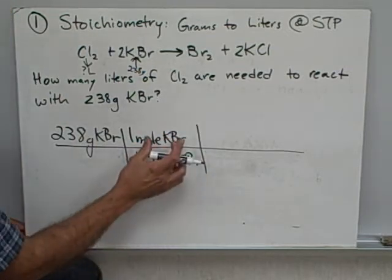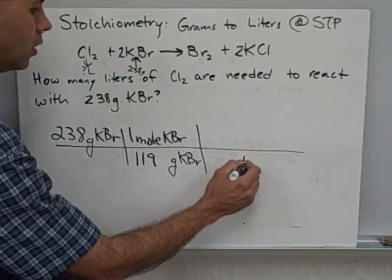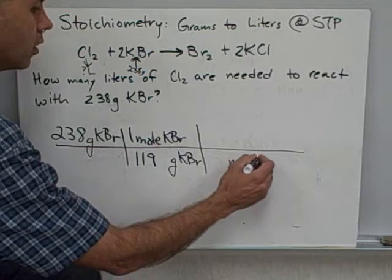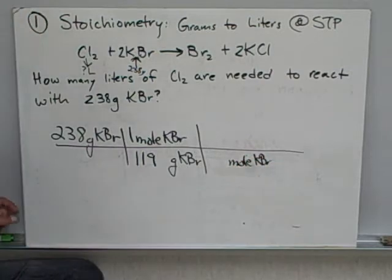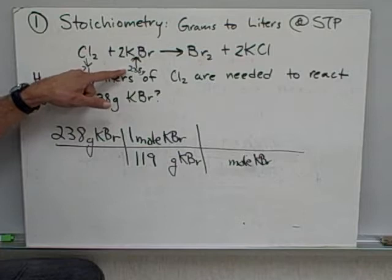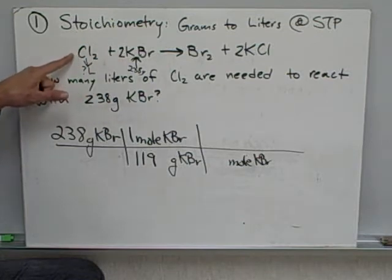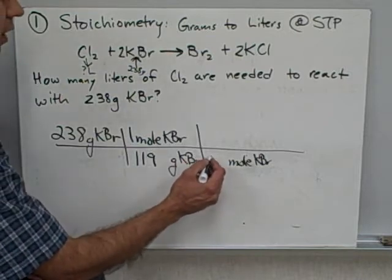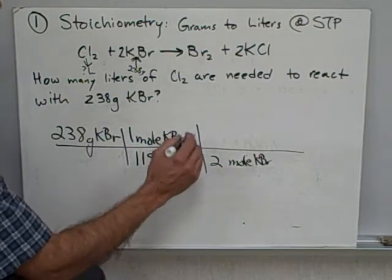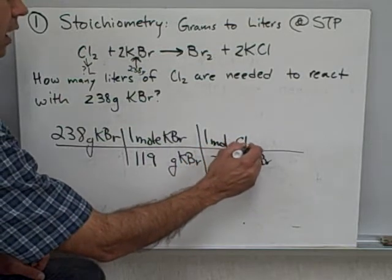Let's keep going. Whatever's here goes down there. Moles of KBr. And what do I know? I know that my first step was to convert from grams to moles. Now I'm up here, I'm going to go from moles, the mole ratio of KBr to the mole ratio of chlorine gas. I've got two moles of KBr to one mole of chlorine gas.